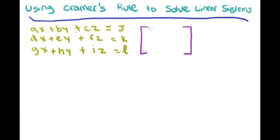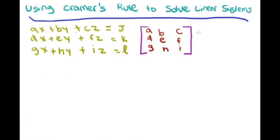We first make our coefficient matrix, except this time it's a three by three instead of a two by two. We put the coefficients of x in the first column, the coefficients of y in the second column, and the coefficients of z in the third column. Our matrix would look something like: a, d, g in the first column; b, e, h in the second; and c, f, i in the third. We then recopy the first two columns.